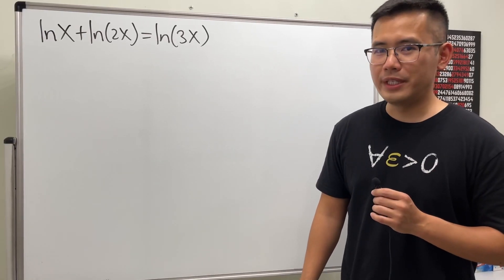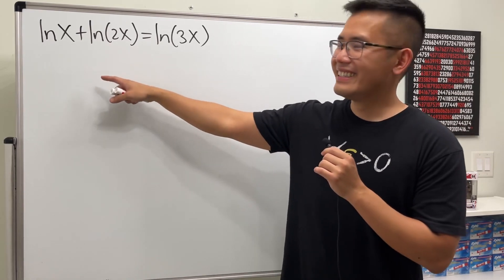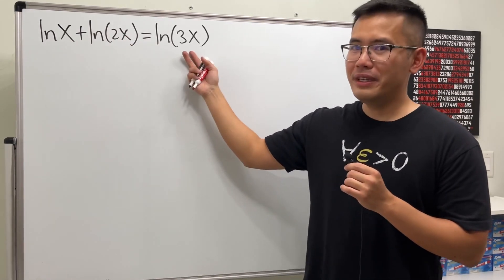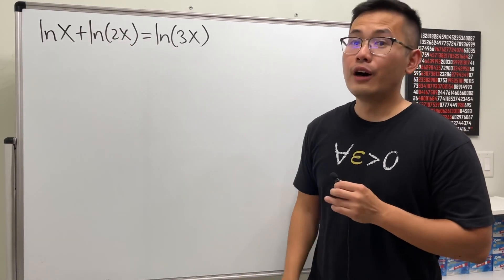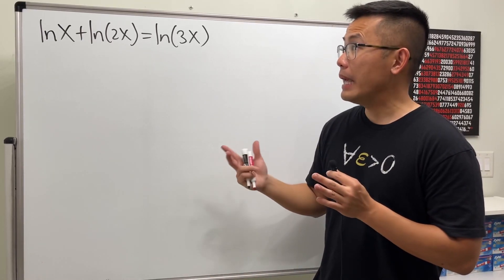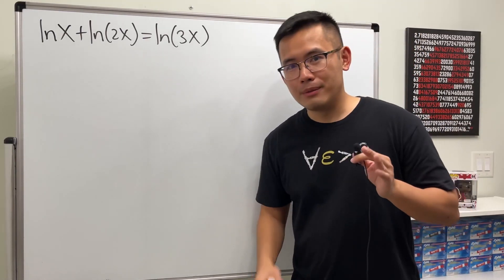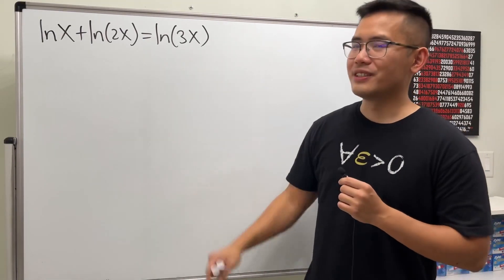Here I have a very interesting logarithmic equation for you guys. We have ln(x) + ln(2x) = ln(3x). Of course this is not always true, but it's true for some x, or maybe not—I don't know. Anyway, please pause the video and try this first.